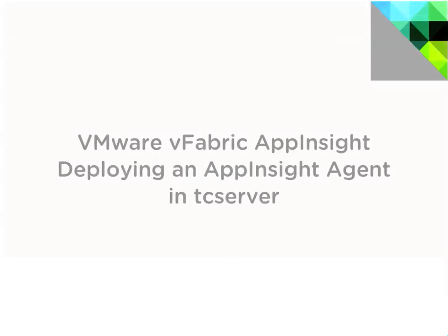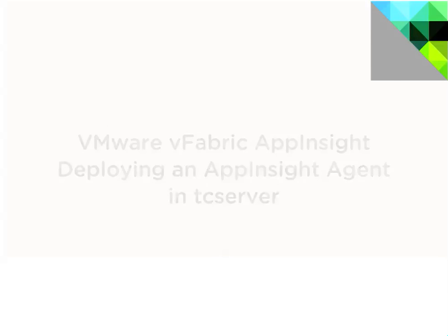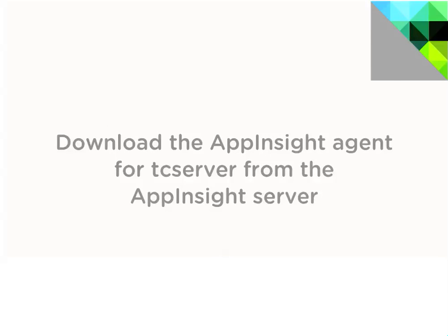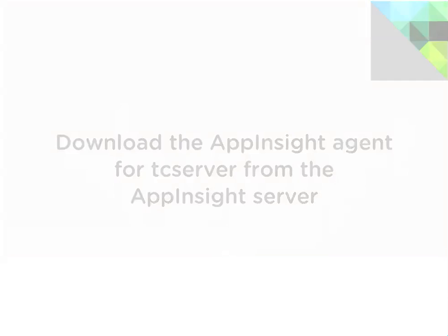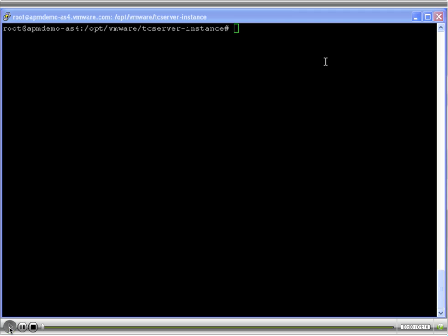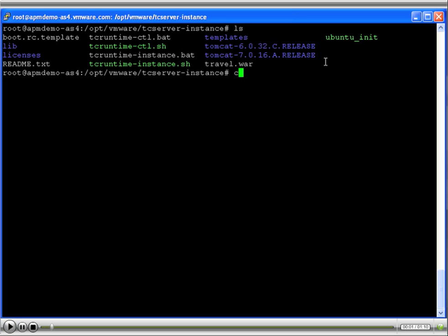In this demo clip, we see how easy it is to deploy an AppInsight agent in TC server. First, download the Insight agent for TC server from the AppInsight server. Unzip this file in the templates directory for your TC server.